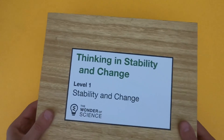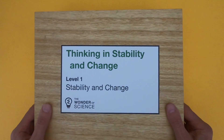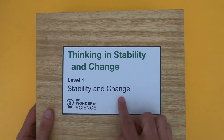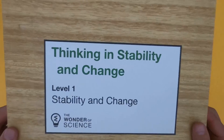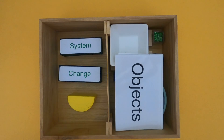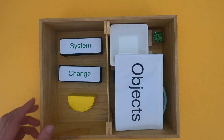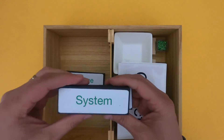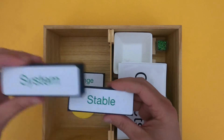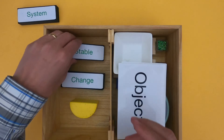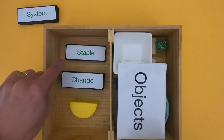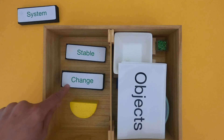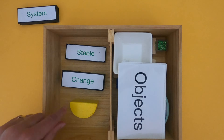Hi, it's Mr. Andersen, and this is Thinking in Stability and Change, level one. It's on stability and change. When you're investigating stability and change, you always want to define the system that you're investigating, but what we're really trying to see is what's the difference between a system that's stable and a system that changes.